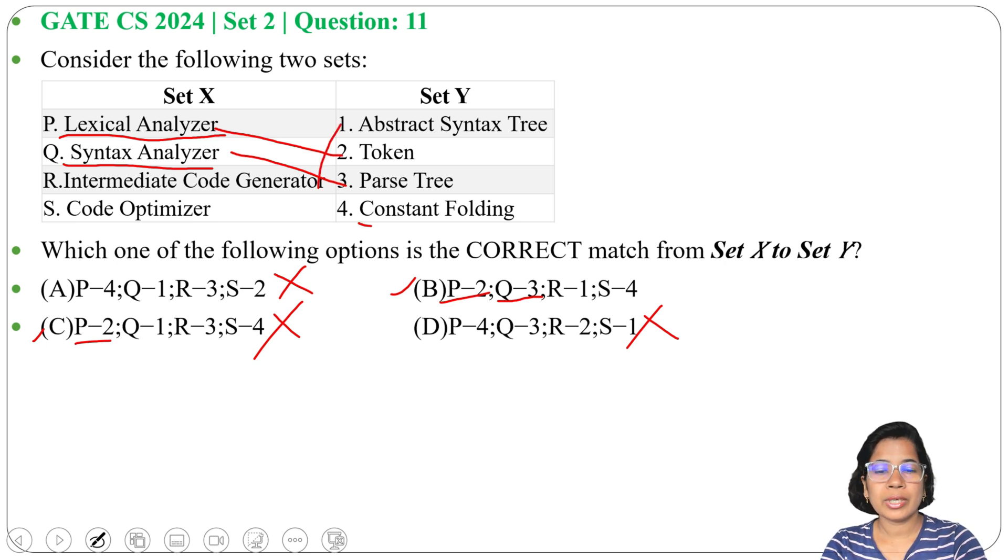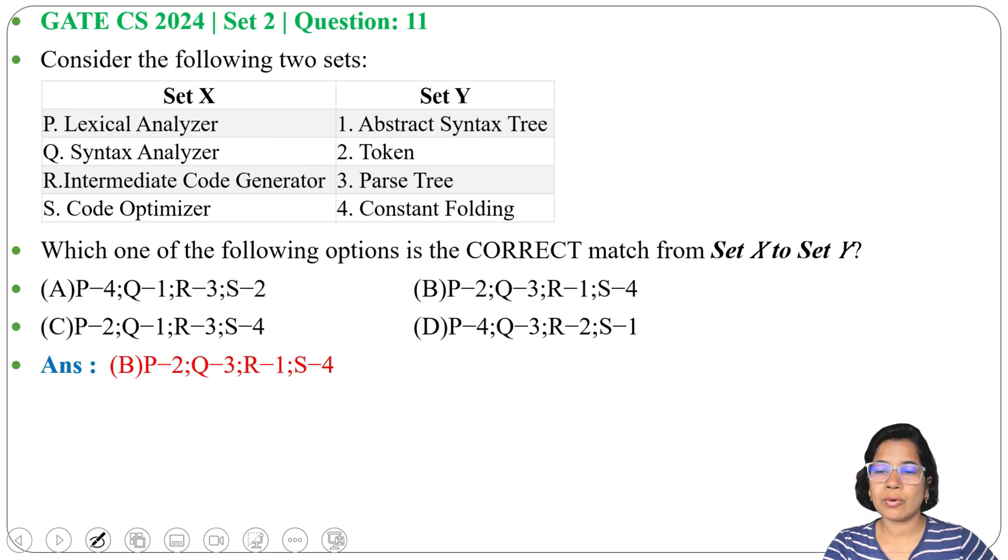Constant folding is a part of code optimization. There are different techniques, one of them is constant folding. So code optimizer matches with 4. Answer is option B: P2, Q3, R1, and S4. Lexical analyzer gives the token.